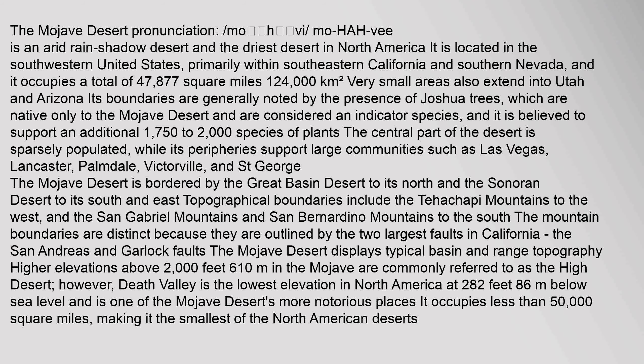Its boundaries are generally noted by the presence of Joshua trees, which are native only to the Mojave Desert and are considered an indicator species. It is believed to support an additional 1,750 to 2,000 species of plants.